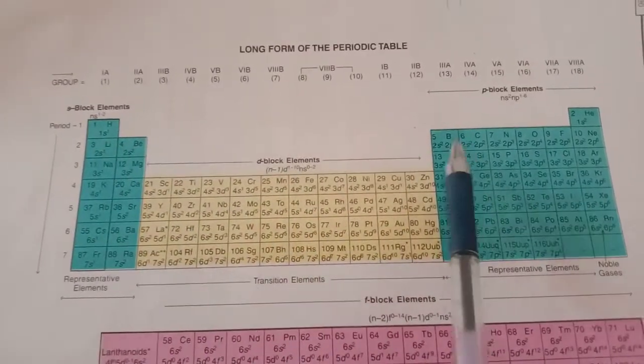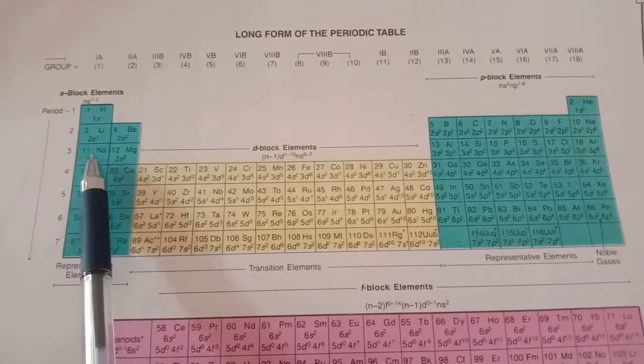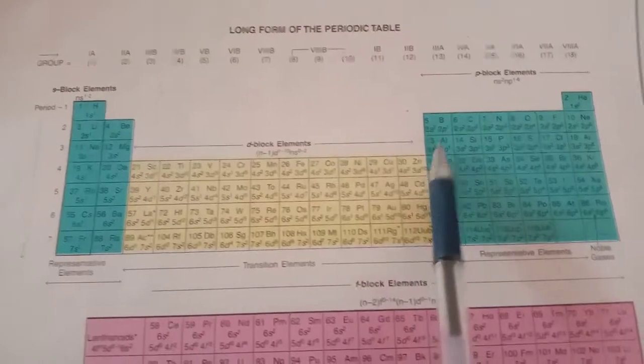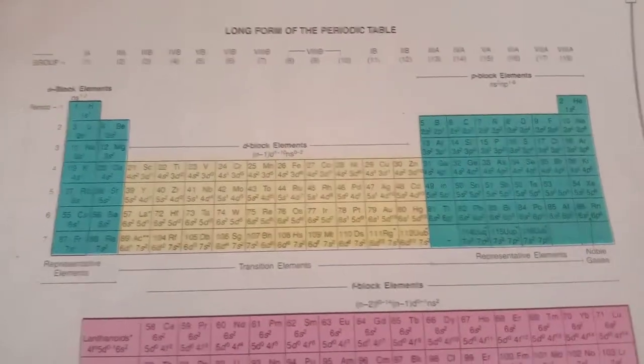Period two contains lithium, beryllium, boron, carbon, nitrogen, oxygen, fluorine, and neon - eight elements in total. Period three contains sodium, magnesium, aluminium, silicon, phosphorus, sulfur, chlorine, and argon. Both period two and three have eight elements each.